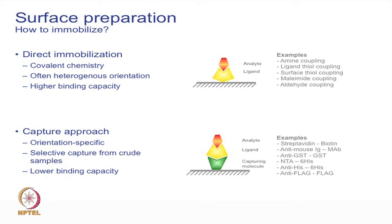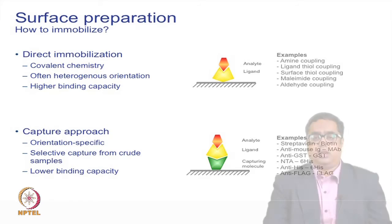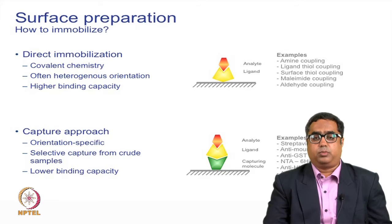Immobilization by the direct method uses covalent chemistry and provides high binding capacity. Examples of direct immobilization are amine coupling, thiol coupling, aldehyde coupling, and maleimide coupling.